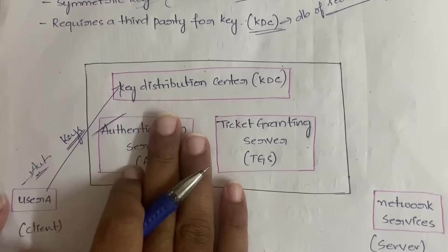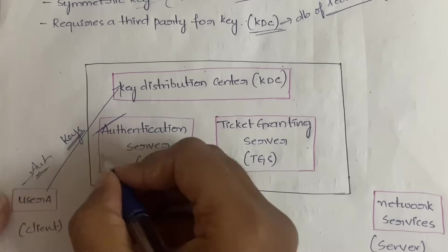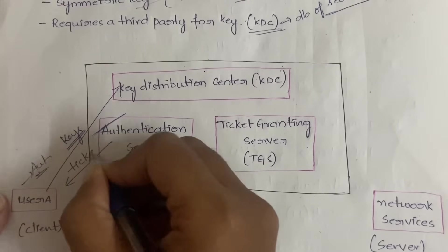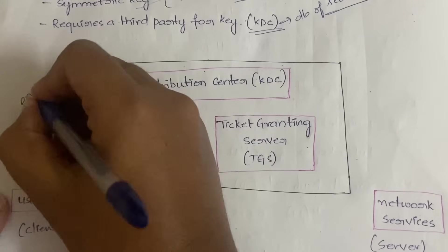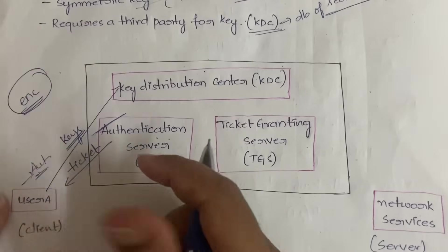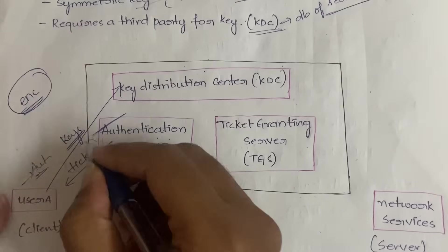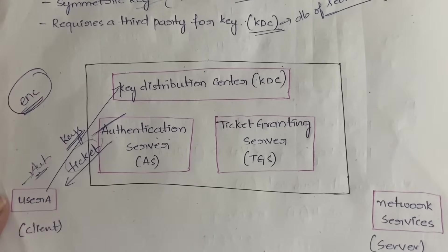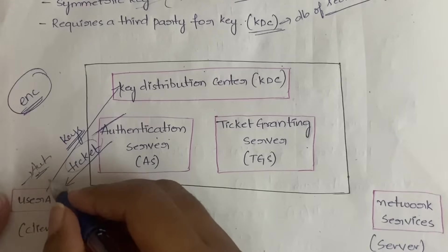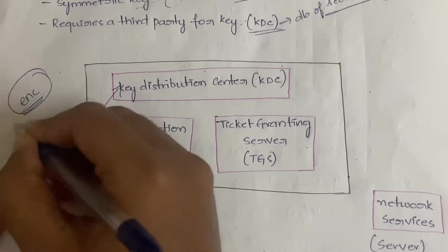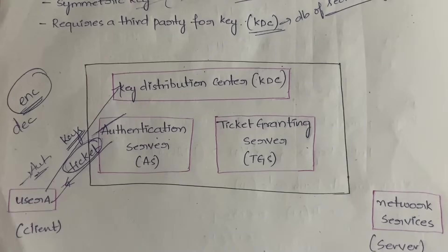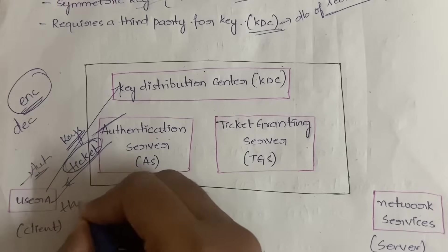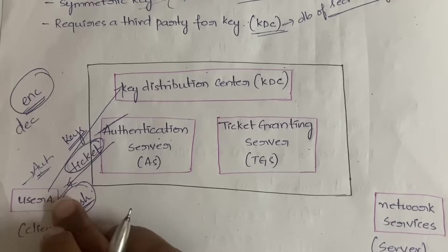The KDC passes the information to the Authentication Server, which is present inside the KDC. The Authentication Server will send a ticket back to the user. This ticket will be in encrypted form — not in normal form. The user has to perform some action on this ticket in order to understand what is present in it. So the user will decrypt the message present in the ticket.